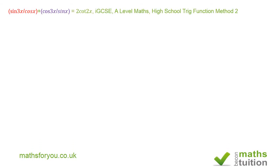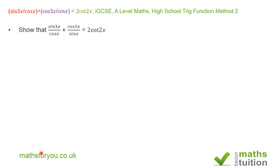Well, hello and welcome to this trick function exercise based on an IGCSE A-level type master question. This is method 2 of the same exercise — I've done method 1 and the link to method 1 is somewhere here. The problem says: show that sin(3x)/cos(x) plus cos(3x)/sin(x) is equal to 2cos(2x).